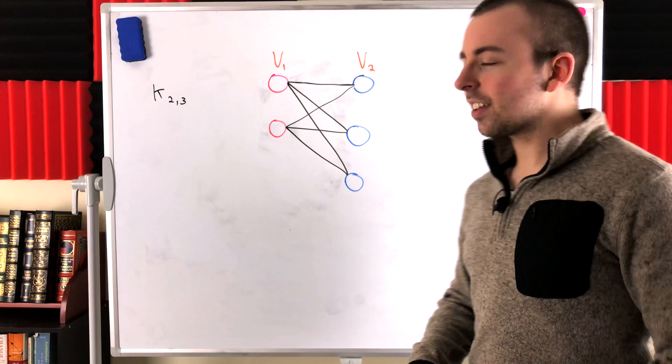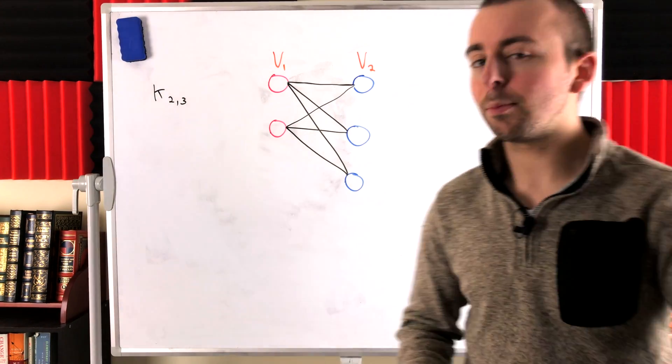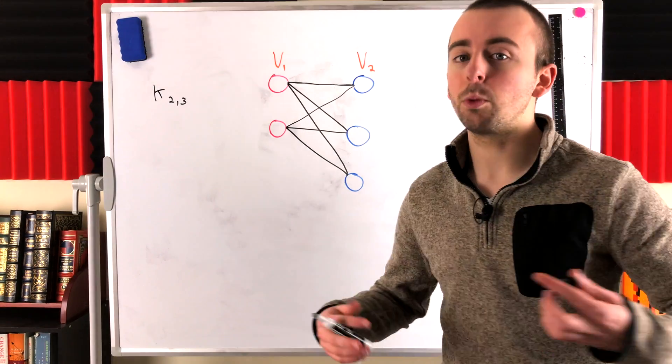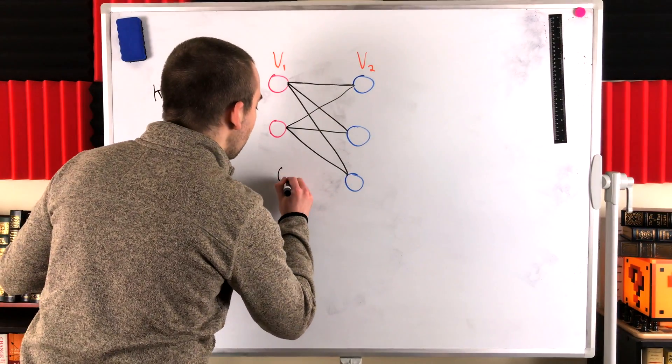Then we might ask, can we throw an isolated vertex into a complete bipartite graph and still have a complete bipartite graph, like we could with normal bipartite graphs? The answer, of course, is no, we can't.